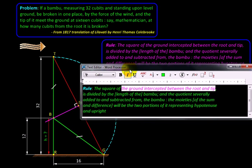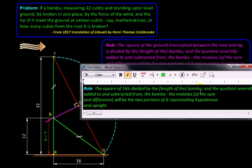Ground intercepted between the root and the tip. So this is the root R and the tip resting on the ground is G. The distance between that is 16. So let us replace this phrase by 16. Moreover, it says the square of, so we are going to multiply it by itself, 16 into 16.